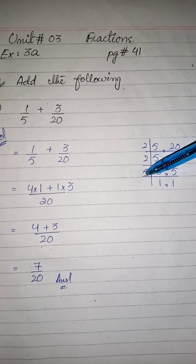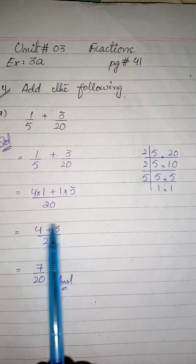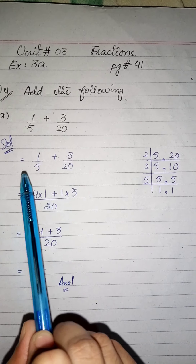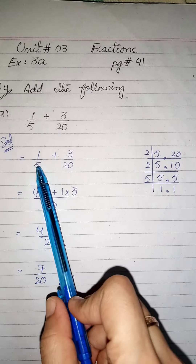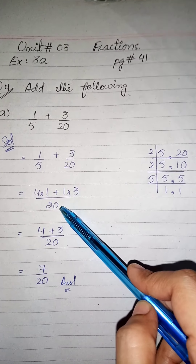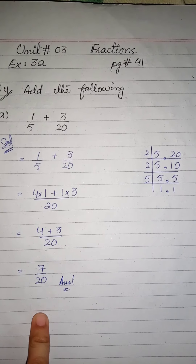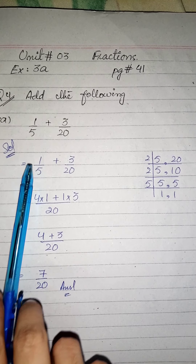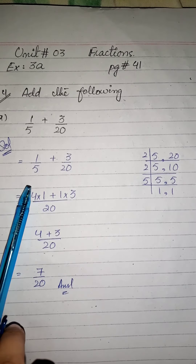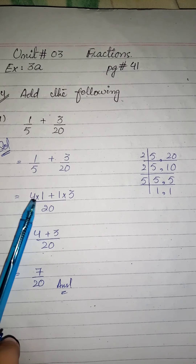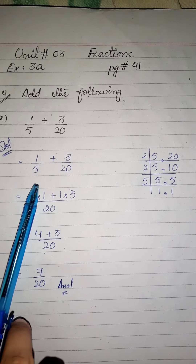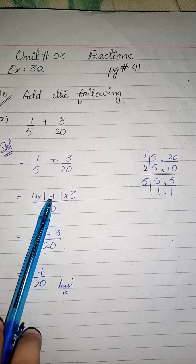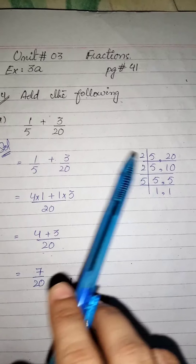Part A: one upon five plus three upon twenty. In dono ko hamen karna hai plus. To hum is ko kaise karenge — ke is ke jo five aur twenty hain, hamare paas hain denominators. Five aur twenty ko hum denominator bolenge, aur one aur three hamare paas numerator hain. Ab jo hamare paas dono denominators hain — five and twenty — is ka hum lenge LCM.